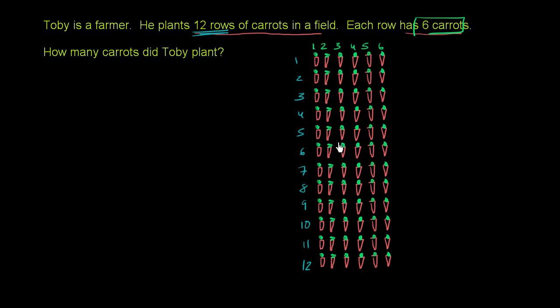Luckily for us, we have multiplication as a tool that we can use. So if you have 12 rows and each of those rows have 6, this is really 12 times 6.